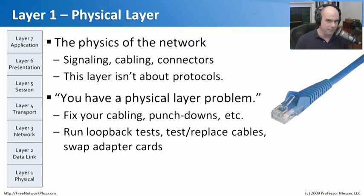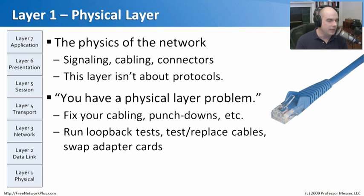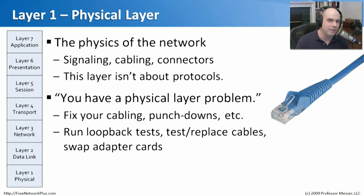You'll often hear about physical layer problems — problems with wiring, connectors, or signals not getting through. This is usually where you begin troubleshooting: making sure you have a solid physical foundation, with correct cabling, good punchdowns, loopback tests over WAN links, testing and replacing cables, and swapping adapter cards. If there's a problem at this layer, it affects every layer above it.